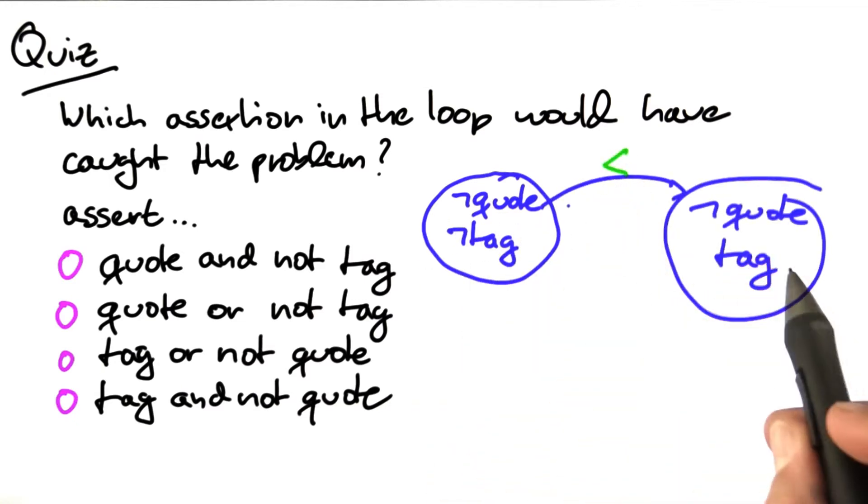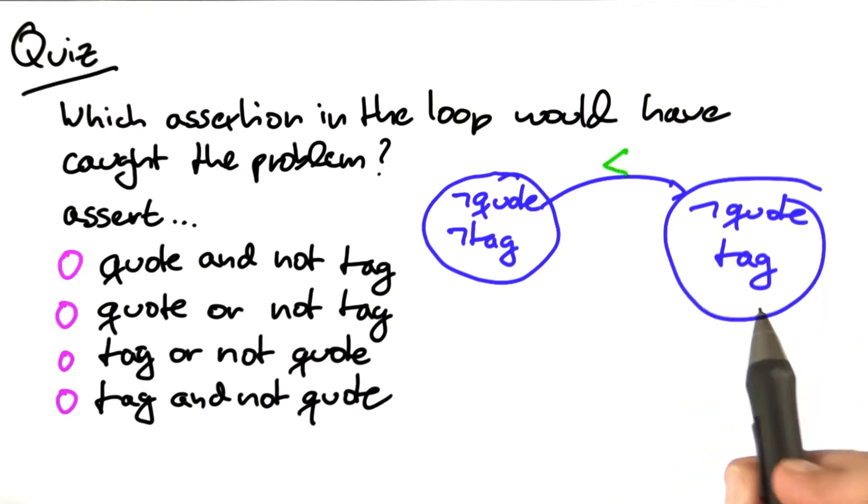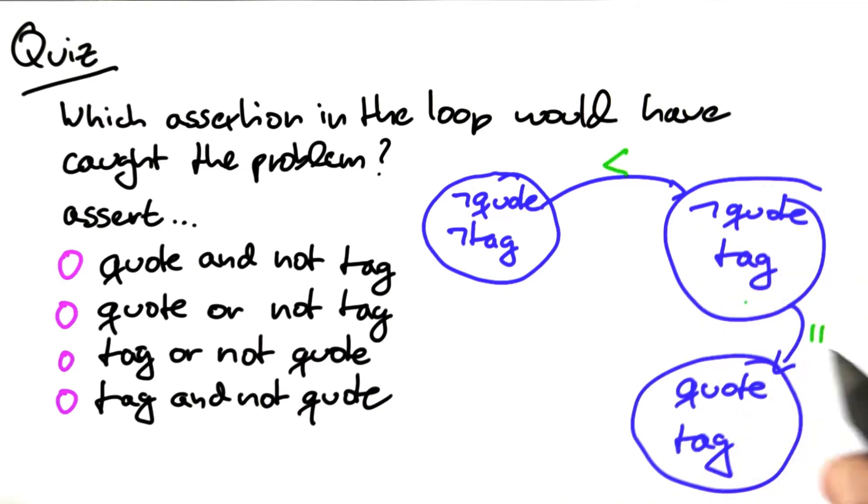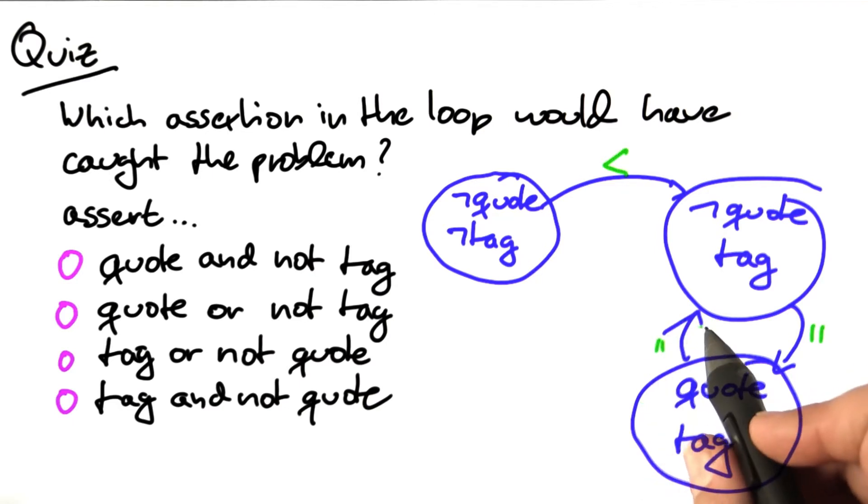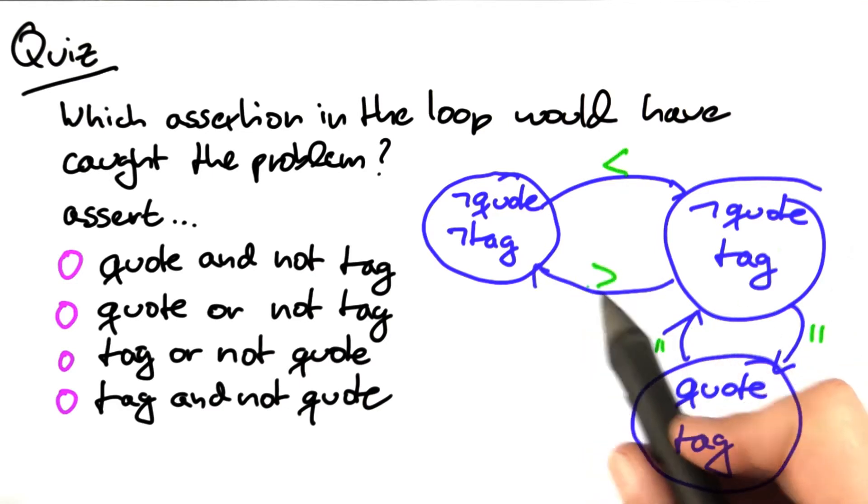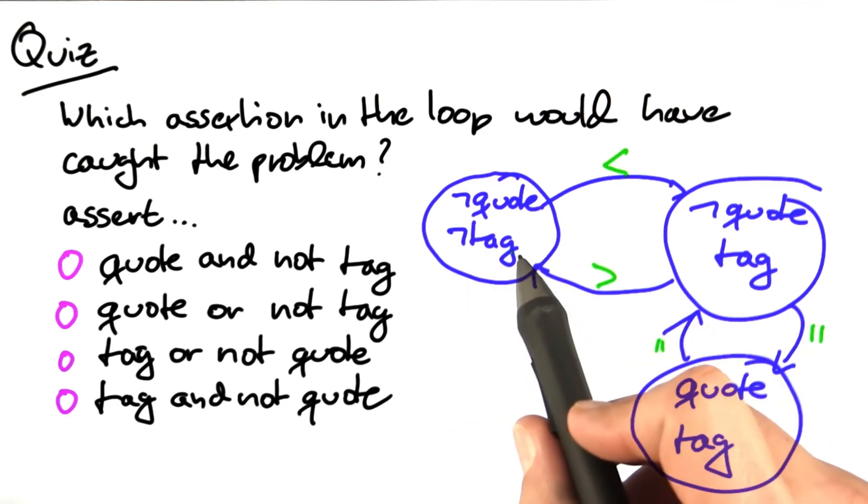If we see a beginning of a tag, we go into the no quote and tag mode. And in this mode, we can go into quote and tag mode, from which we exit again by seeing a closing quote. And when we see the closing tag, we go back into the non-quote, non-tag mode.